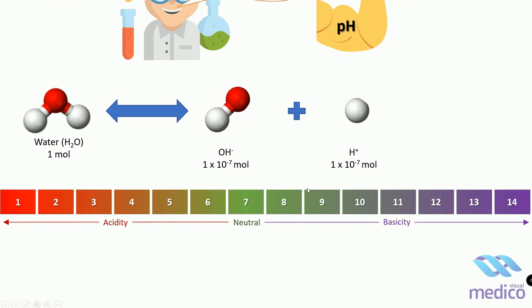So farther away from 7, if it is more than 7, it is basic. This one is most basic and basicity decreases as it comes near to 7. Similar to that here also, this one is most acidic and 6 is least acidic.